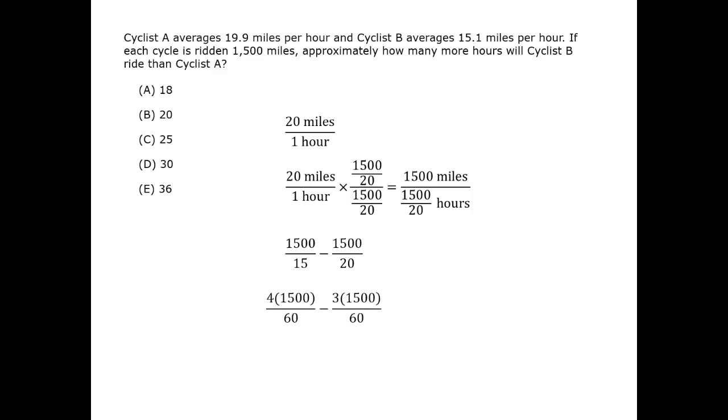That way, we get 4,500 in the top minus 3,500 in the top. We are left simply with 1,500 in the top.